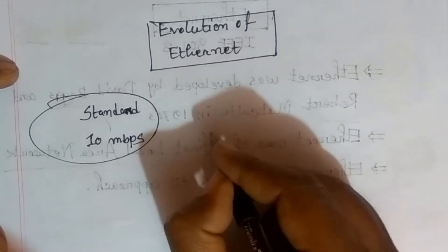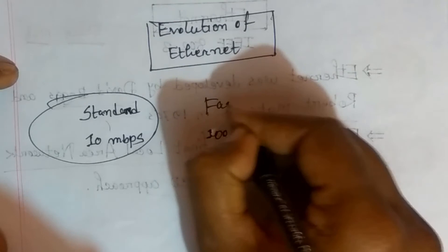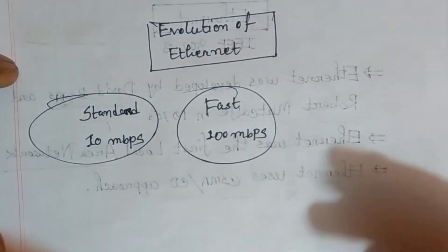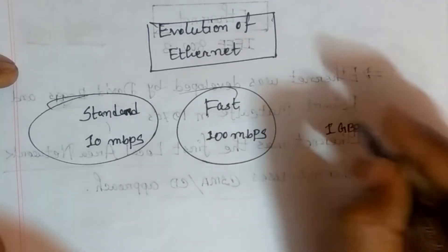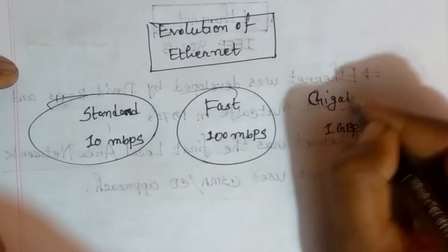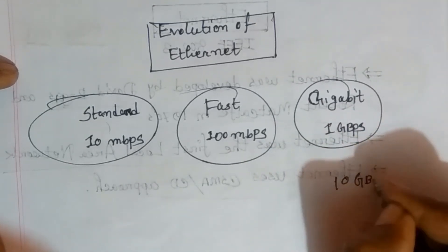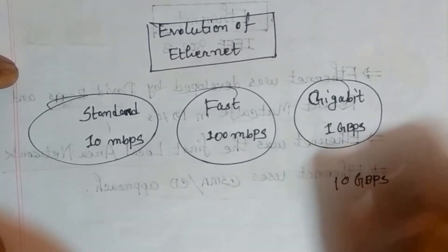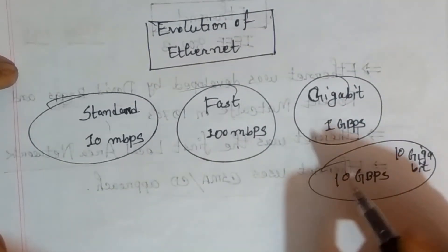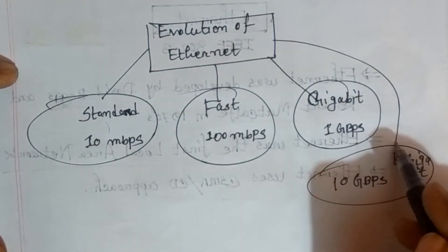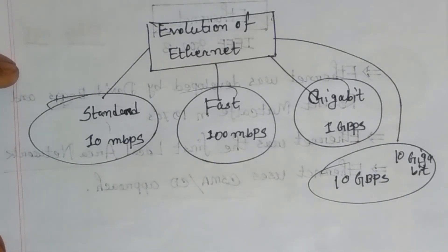When 10 Mbps was no longer sufficient, it was improved to 100 Mbps, and this version was called 'Fast Ethernet'. Further improvement brought us to 10 Gbps. This is the evolution of Ethernet.